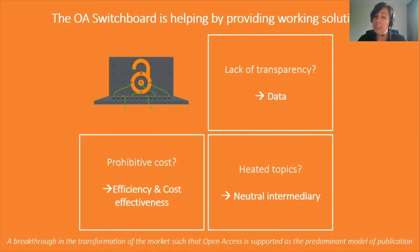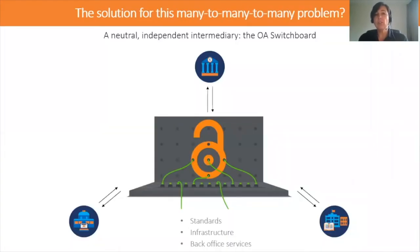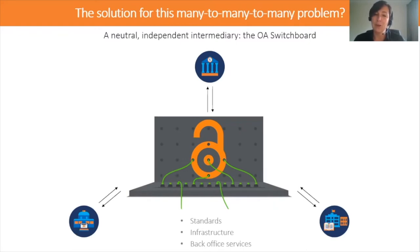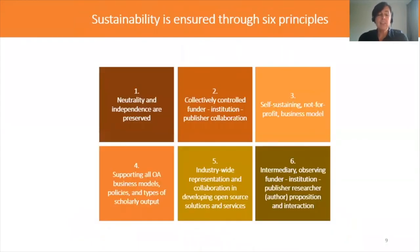These are sometimes heated topics, and it would help to have a neutral intermediary that everybody trusts to deal with them. This topic was being discussed by various stakeholders well before the 2020 project began, and quite early on they thought that an independent, neutral intermediary — one that only deals with the exchange of information and streamlines communication — contributes to the solution. Bringing and agreeing on standards, having a shared infrastructure, and providing back-office services to communicate and exchange information between the three stakeholder groups is the solution, and that is what the OA Switchboard does.